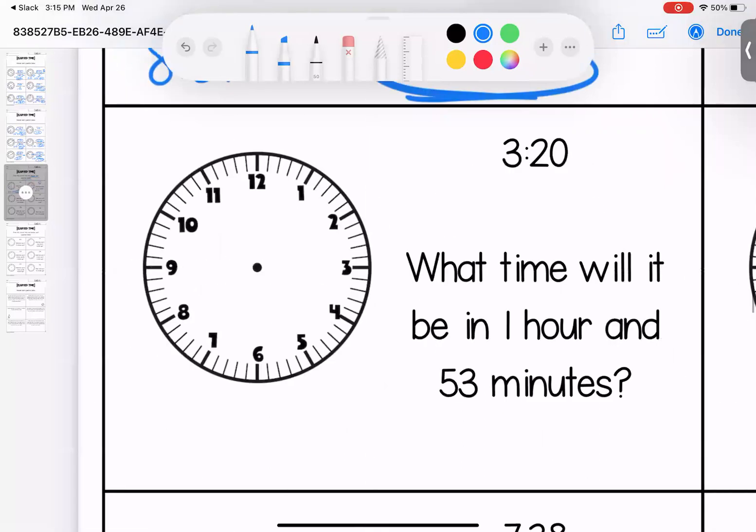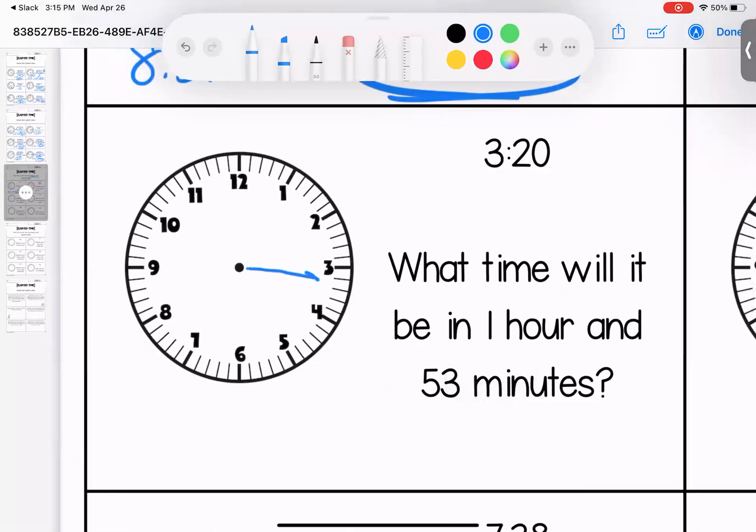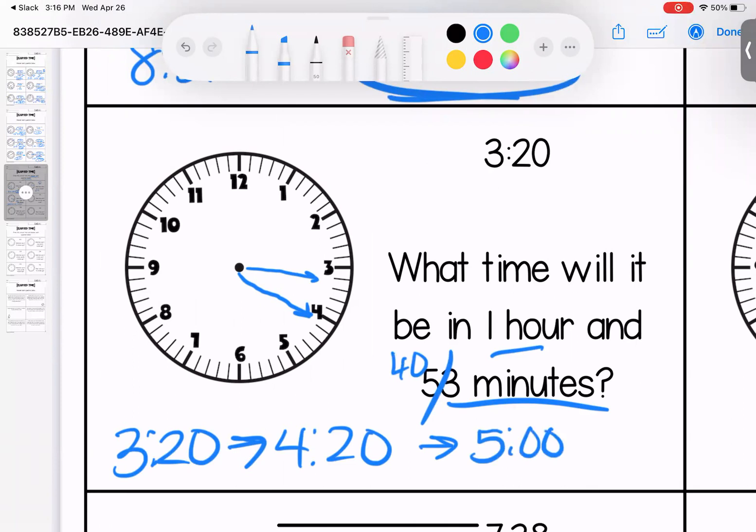Coming over here, it's 3:20. What time will it be in one hour and 53 minutes? So 3:20 plus one hour is 4:20, and then 4:20 to 5 o'clock would be 40 minutes. Add another 13 minutes would be 5:13.